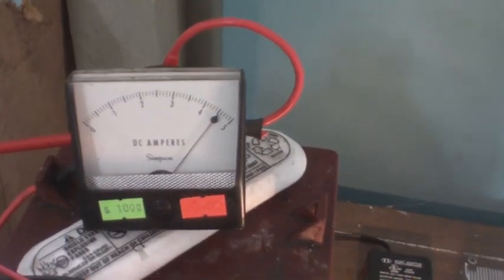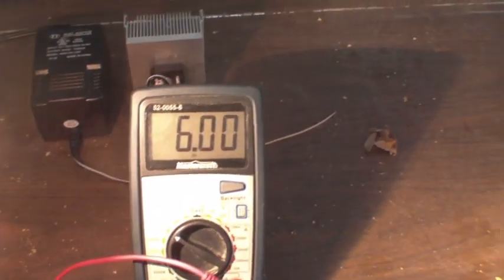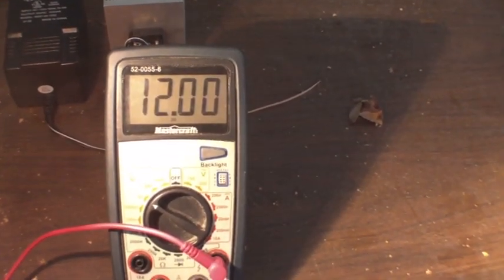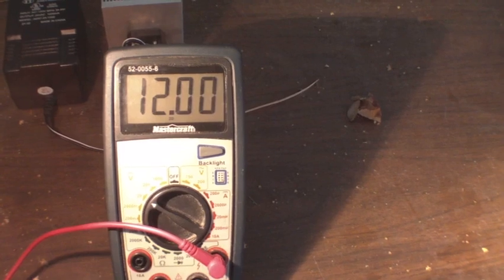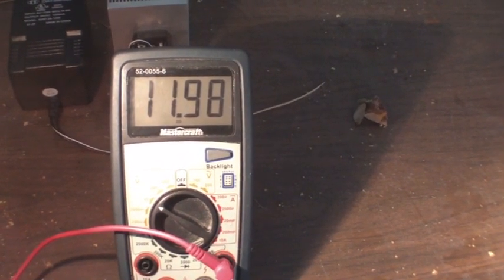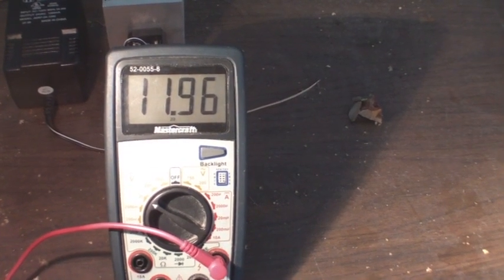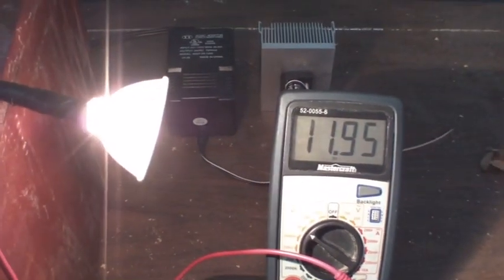Okay, so right away we have 4.5 amps, and let's see what's happening with the voltage. We've got a good bright bulb.